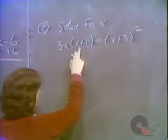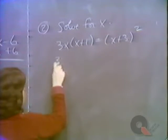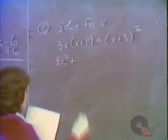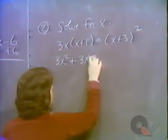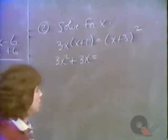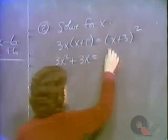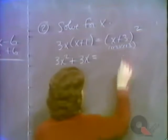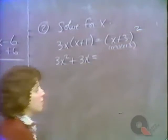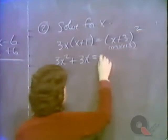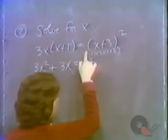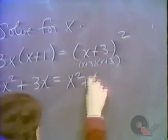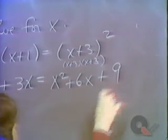Using the distributive law, 3x times x gives us 3x squared, and 3x times 1 gives us 3x. Then x plus 3 squared is x plus 3 times x plus 3. Multiplying out by FOIL: the first terms give x squared, the outer is 3x, the inner is plus 3x — that's plus 6x — and the last terms give plus 9.